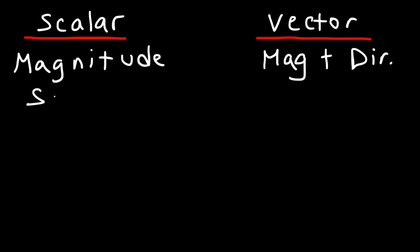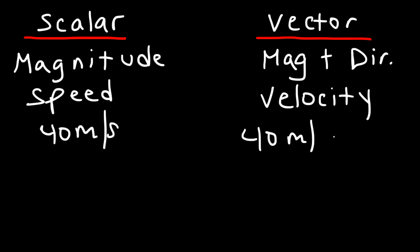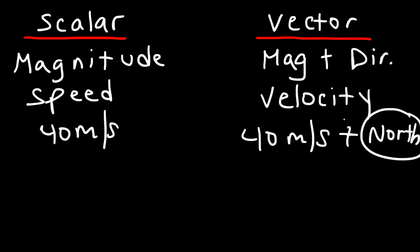For instance, speed is considered to be a scalar quantity. However, velocity is a vector quantity. If I'm driving a car going 40 meters per second, I've only given you my speed — just a magnitude, just a number. But if I say I'm going 40 meters per second north, now I've given you my velocity: both speed and direction. The 40 meters per second represents the magnitude, and north tells you the direction.